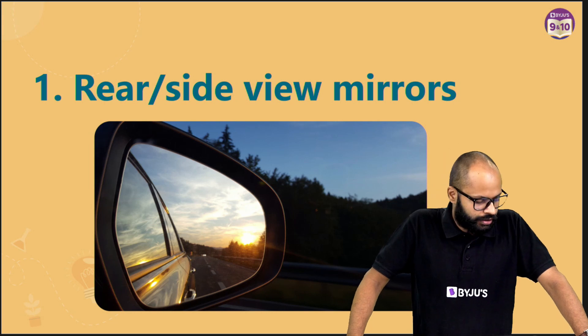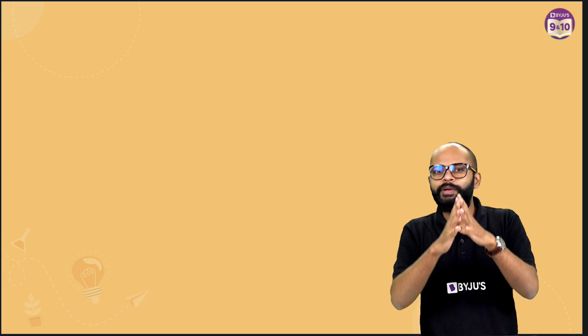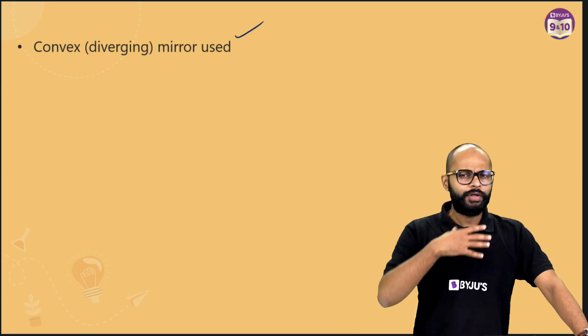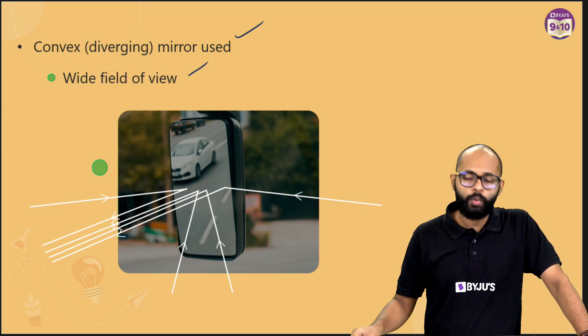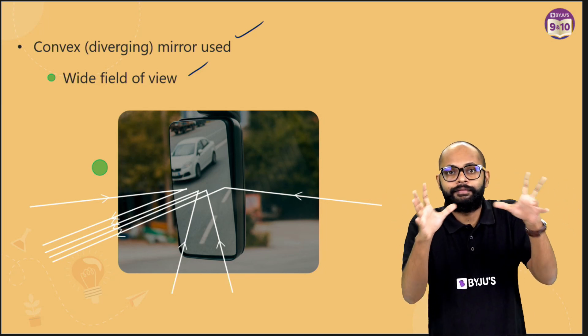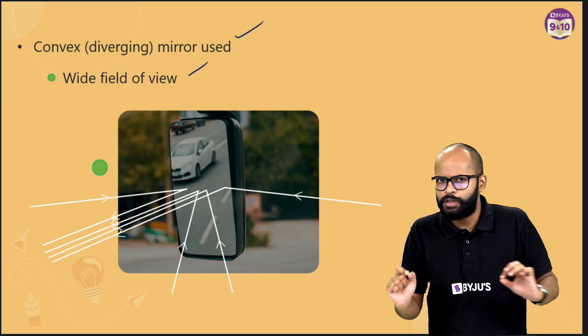First application: rear view or side view mirrors. A rear view mirror is used in vehicles to see what is behind you — the road, other vehicles. We use a convex mirror because you want the image to be virtual, inside the mirror, and erect. You wouldn't like the vehicles behind you to appear upside down. There is also the benefit of a diminished image. A convex diverging mirror gives you a wider field of view and more coverage in terms of viewing area.